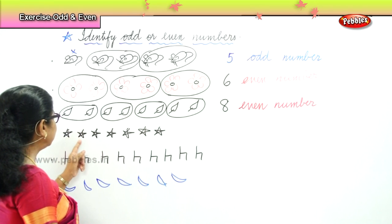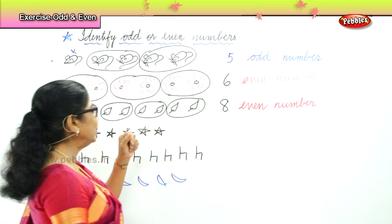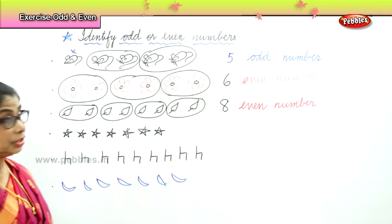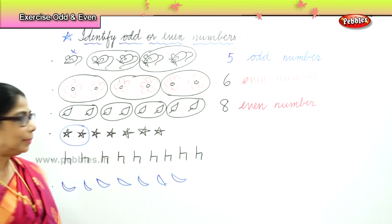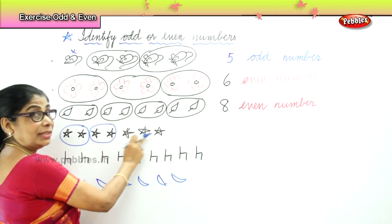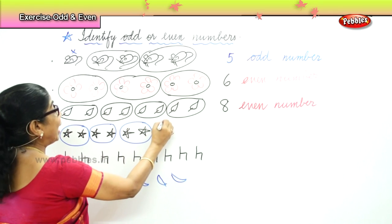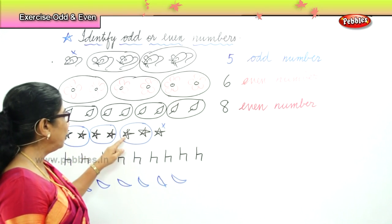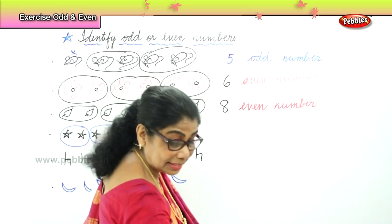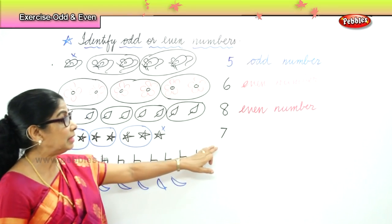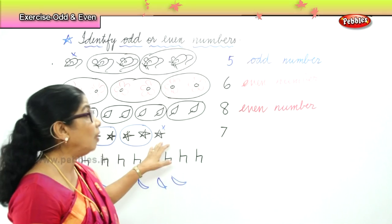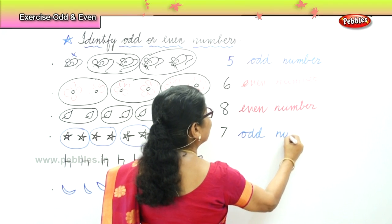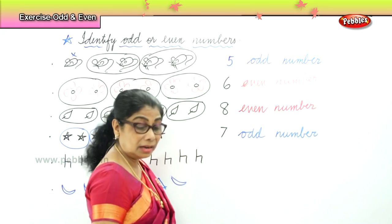Next we have one, two, three, four, five, six, seven stars. And what are we going to do with the stars? We're going to pair up the stars. Count in twos: one, two — these two stars together; one, two — these two pair up together; one, two — these two pair up together. We have one star left without a pair. One, two, three, four, five, six, seven. What is the number? Number seven. So number seven — because there is one odd one out — it's called an odd number. Number seven is an odd number, because there is a star that cannot be paired up.